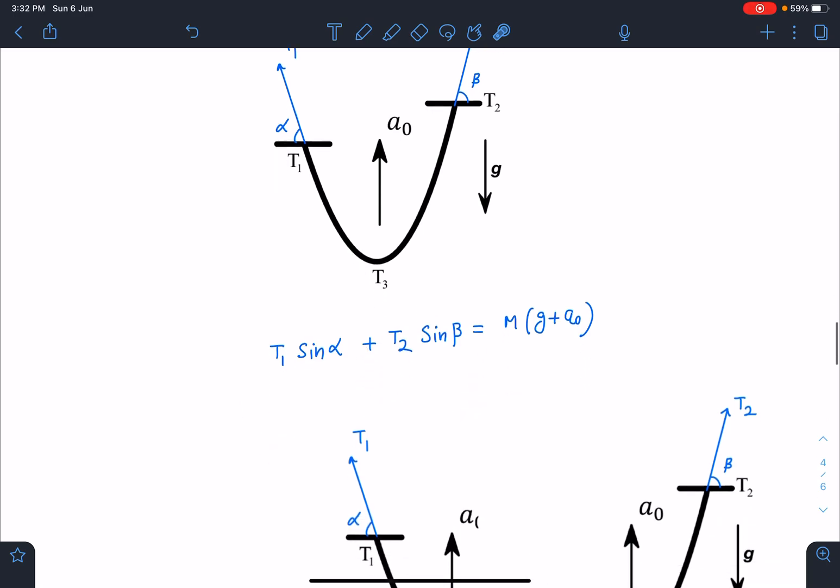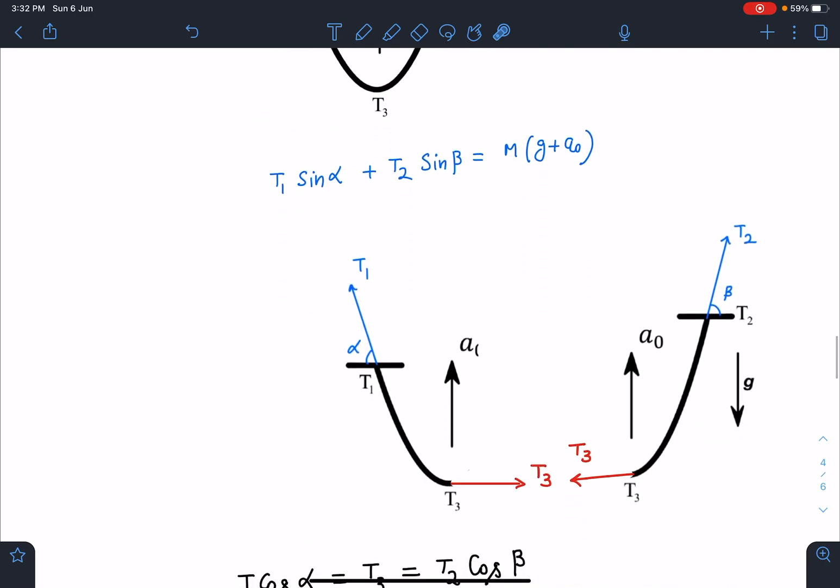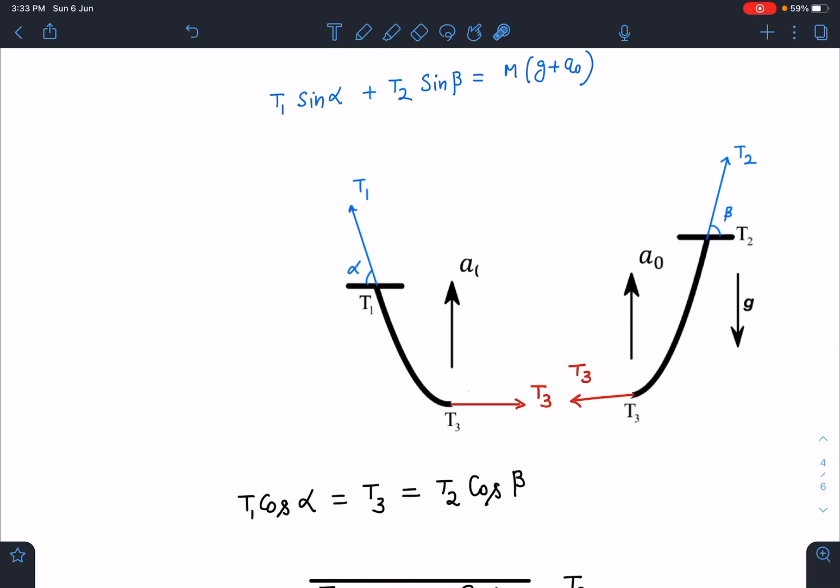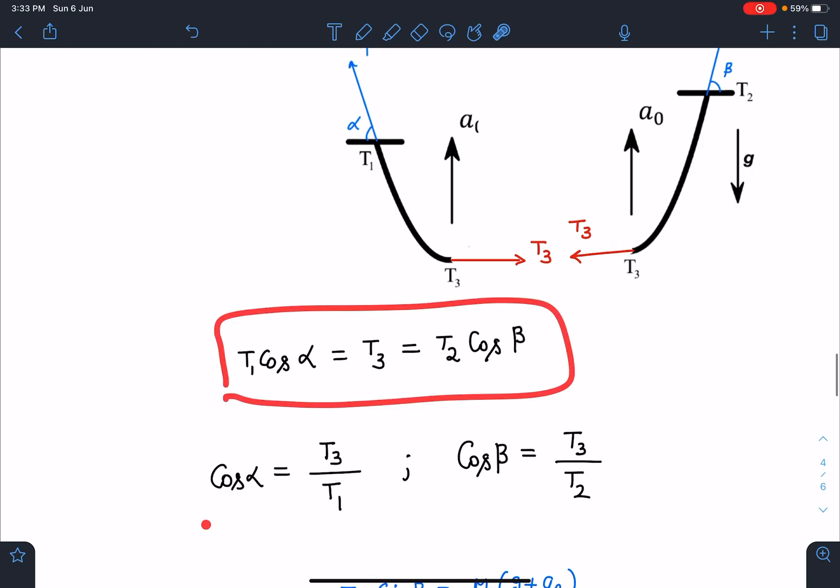Now let's draw the FBD or free body diagram of one half - the left half. You will see the forces here: this tension at the lowest point will be in horizontal direction T₃, and this vertical component will be balancing the weight part. In horizontal direction I can directly say T₁cosα = T₃. At the same time from the right half you can see that T₂cosβ = T₃.